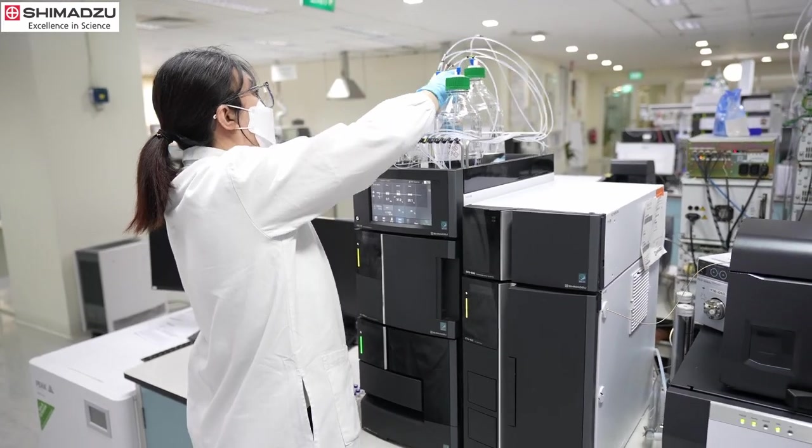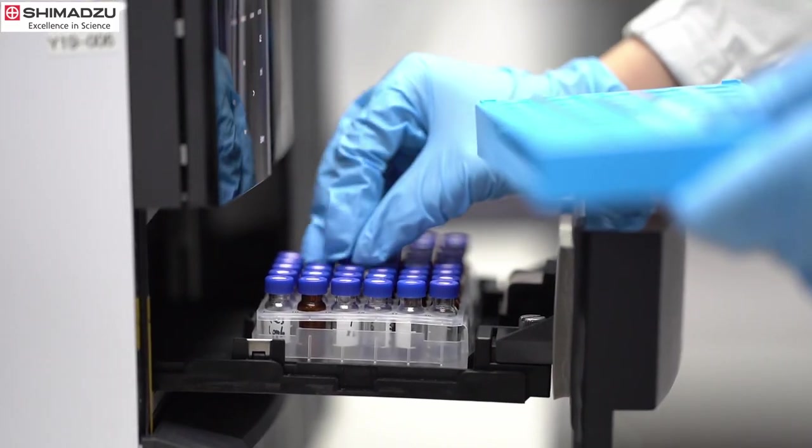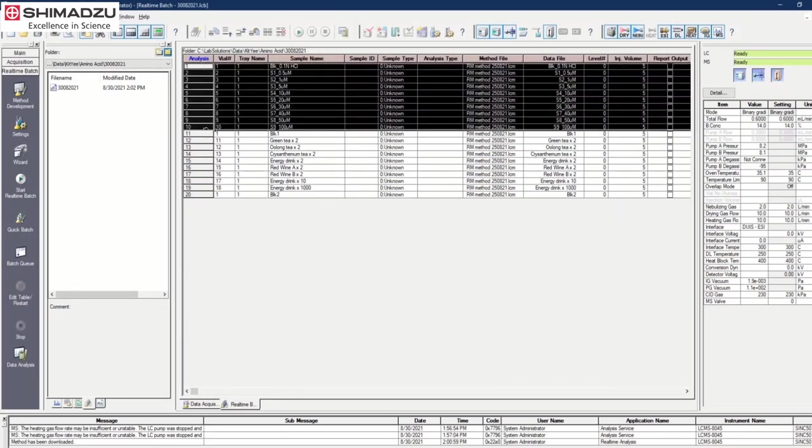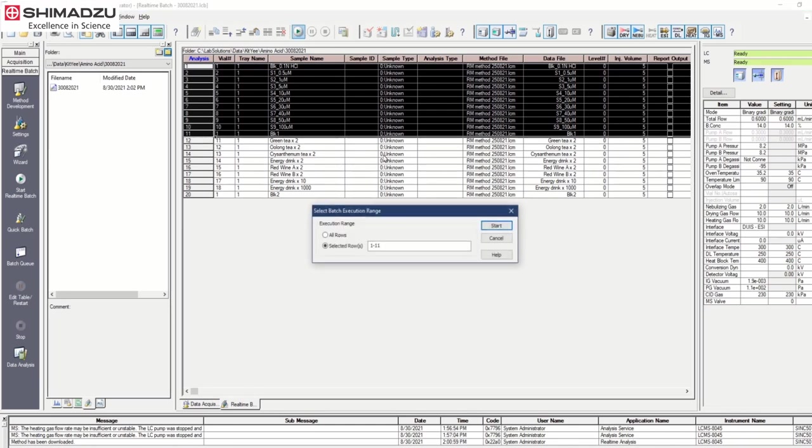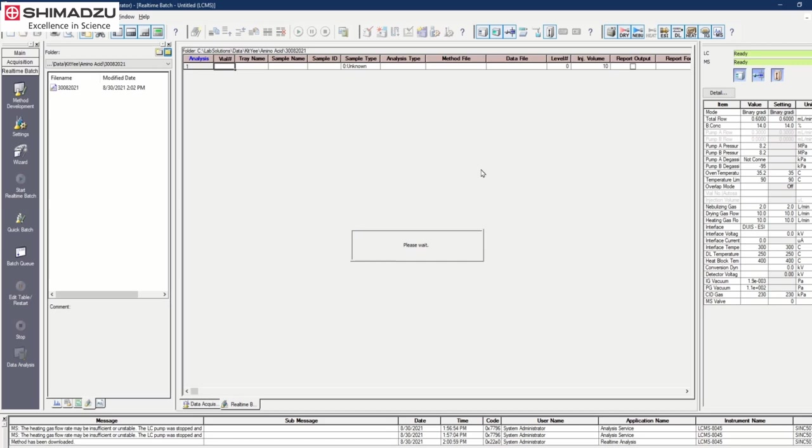Prepare the instrument with mobile phases and transfer the sample vials into auto-sampler sample tray. In LabSolutions software, create a batch table for the analysis. Highlight to select the samples and press the start button to begin the sequence run.